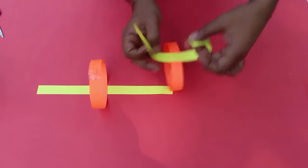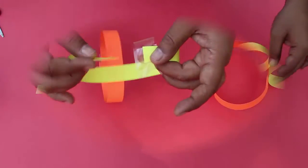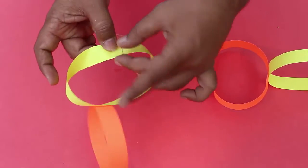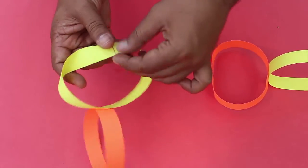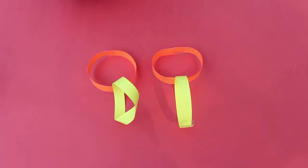We will tape the other one with a 180 degree twist. Now you can see this one is without any twists and this one, the green one, has a twist.